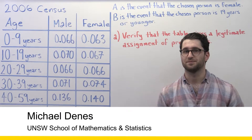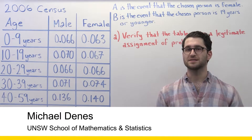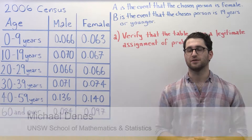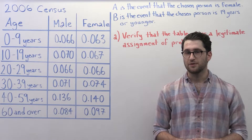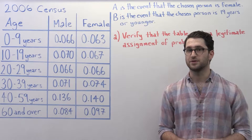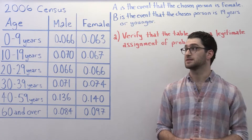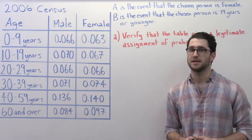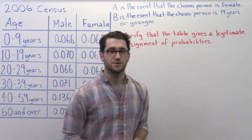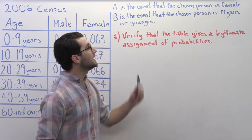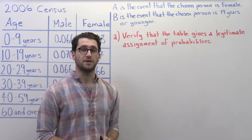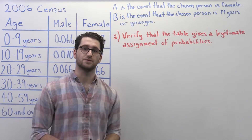Let's have a look at this question. The 2006 Australian Census recorded the age and gender of everyone living in Australia. If we choose an Australian resident at random, the 2006 census gives us these probabilities. Let A be the event that the person chosen at random is female, and let B be the event that the person chosen at random is 19 years or younger.